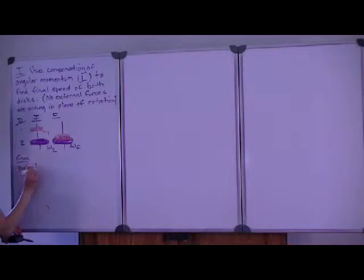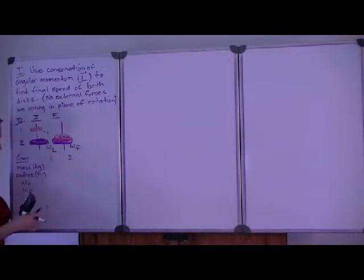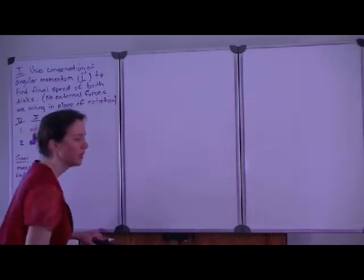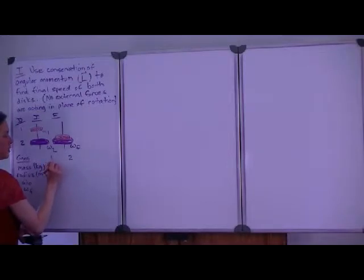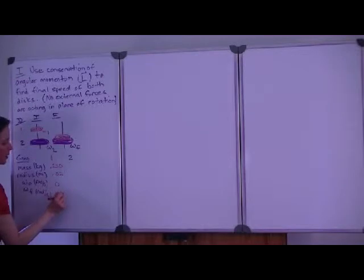We're given masses, which we want to express as kilograms, radii, which we want to express in meters. We are interested in the initial and final velocities, so omega initial and omega final. Let's track those for later use for mass 1 and mass 2. Mass 1 is given to us as 250 grams, so that's 0.250 kilograms. The radius is 0.021 meters. Its initial speed is 0. The units we're interested in there are radians per second. And we do not know the final angular speed, so we'll designate that omega final.